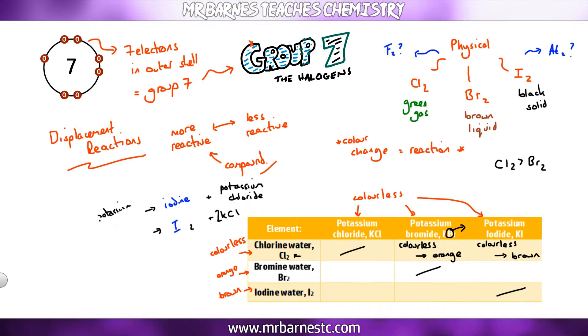So what happens if I add bromine water into potassium chloride and potassium iodide? If I take bromine water which is orange and add it into my colourless potassium chloride the potassium chloride will stay colourless. This proves that bromine is less reactive than chlorine which backs up what we said.